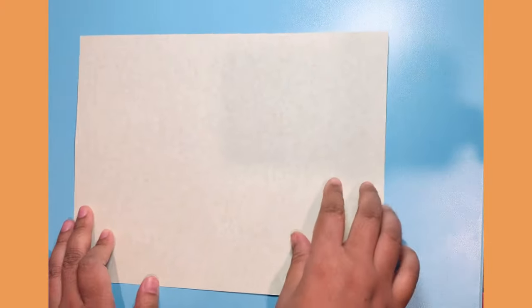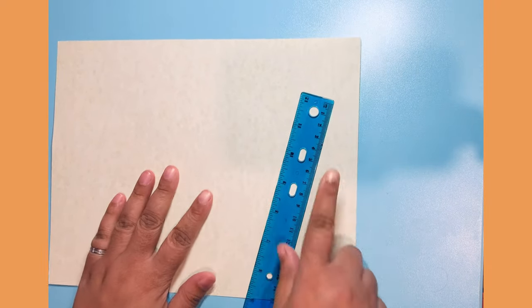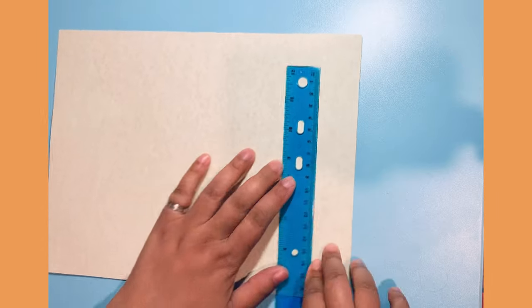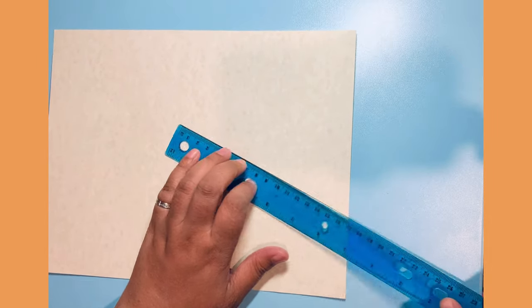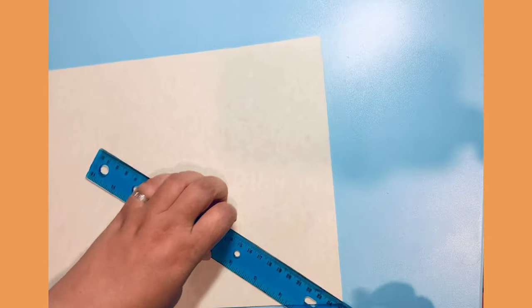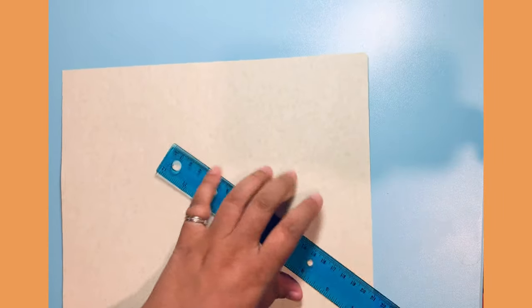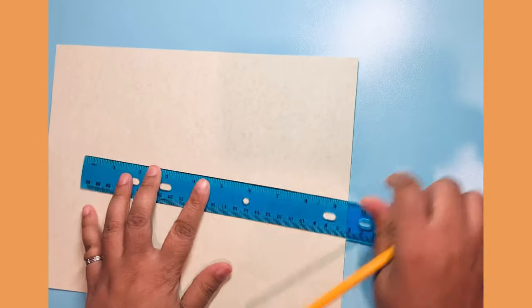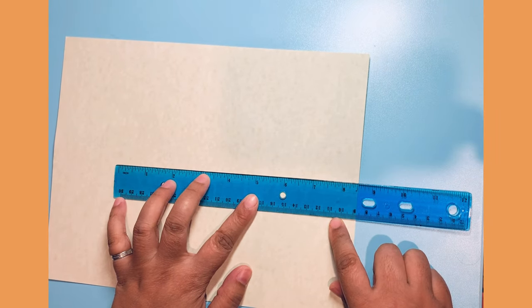For this one, again we need a sheet of paper. This is cardstock here, and we need to make it a square. Since this is a letter size 8.5 by 11, I'm going to make an 8.5 inch square. I'm going to make some marks and then cut it out, so I have to measure 8.5 inches.